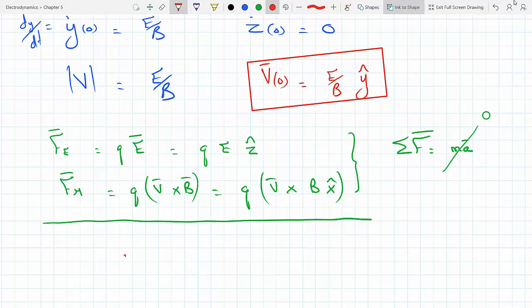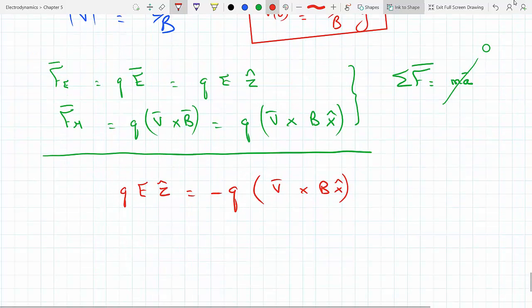So one has to be negative the other. In other words, q E in the z has to equal minus q v cross B in the x. That means v cross B has to be in the z, in the minus z.